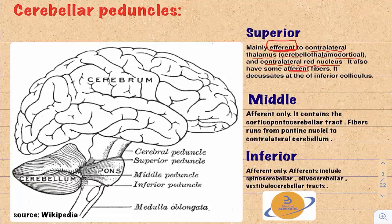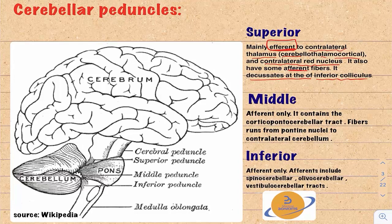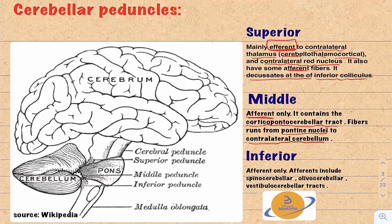The superior cerebellar peduncle decussates at the level of the inferior colliculus. The middle cerebellar peduncle is only afferent, mainly composed of the corticopontocerebellar tract — fibers from the cerebral cortex running to the ipsilateral pontine nuclei and then to the contralateral cerebellum. The inferior cerebellar peduncle is also only afferent, carrying the spinal cerebellar tract, olivocerebellar tract, and vestibulocerebellar tracts.